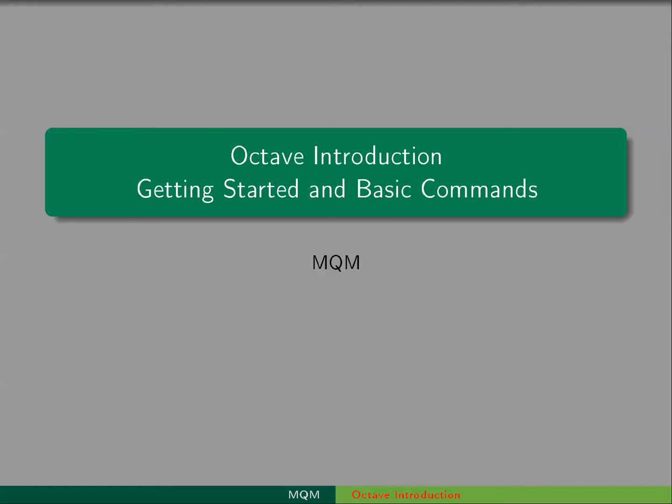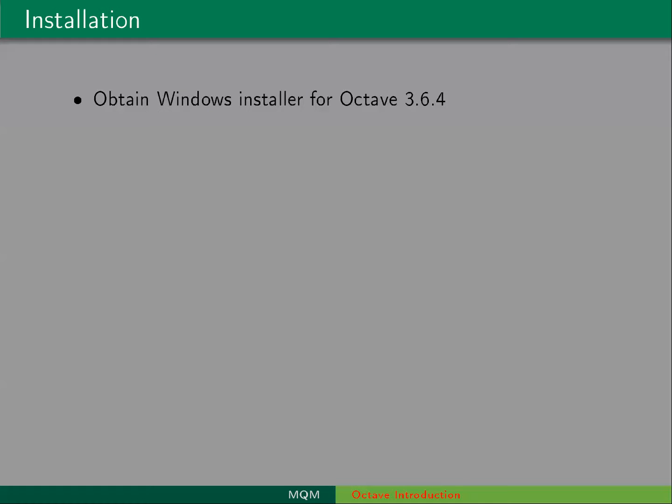The only thing that's different in this presentation is this slide for installing Octave. Octave is a free and open-source software package and it provides high-level mathematics computation. You can download Octave for Windows at this link here and it should work in the PDF. Or if it doesn't work, then just go to SourceForge and find the latest version of Octave.